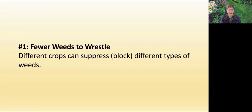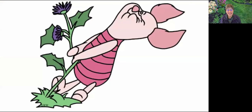Number one: you have fewer weeds to rustle. Different crops can actually suppress or block different kinds of weeds, which means you'll spend less time playing tug-of-war with weeds. By switching up your crops, weeds lose their grip over time.